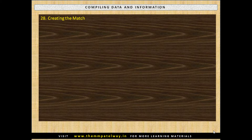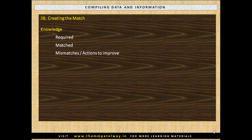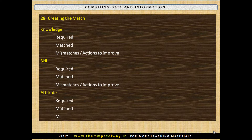Work on Creating the Match: study capabilities required versus your capabilities in three areas. First is Knowledge — Knowledge required, Knowledge matched, Mismatches and Actions to Improve. Second is Skill — Skill required, Mismatches and Actions to Improve. Third is Attitude — Required, Matched, Mismatches and your Actions to Improve.